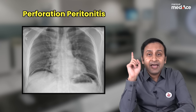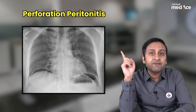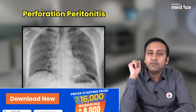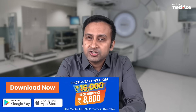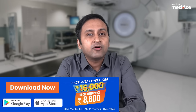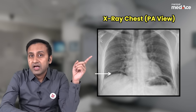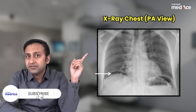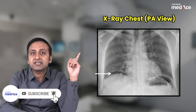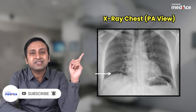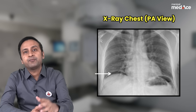This free air under diaphragm is considered the most important finding in cases of perforation peritonitis. Now let us talk about the investigations available for perforation peritonitis. Amongst the radiographs, x-ray chest PA view in erect posture is considered the most sensitive radiograph for diagnosis of pneumoperitoneum.